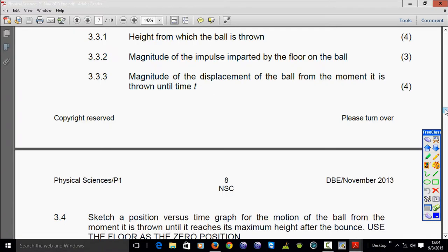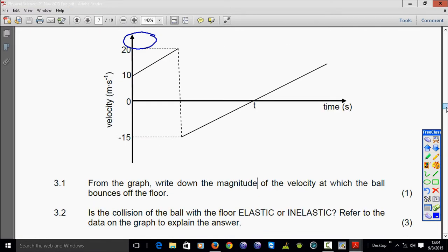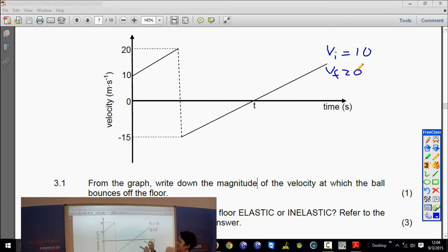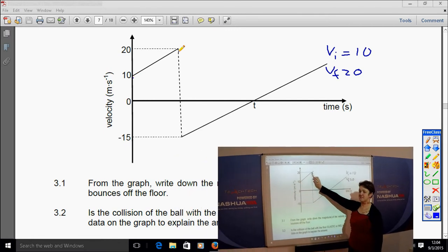Now we have a calculation or two. First of all, the height from which the ball is thrown. So firstly, what is the symbol for height? And then what other information do I have from my graph? So let's go back to our graph. We have initial velocity, 10. We have final velocity, 20. Because now they're asking the height from which it is thrown. There it is thrown, there it hits the ground.